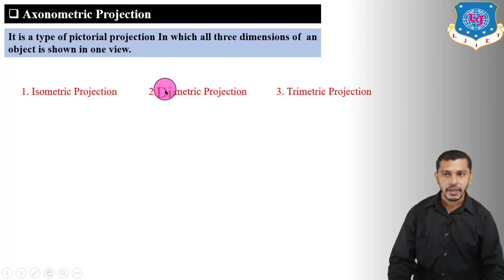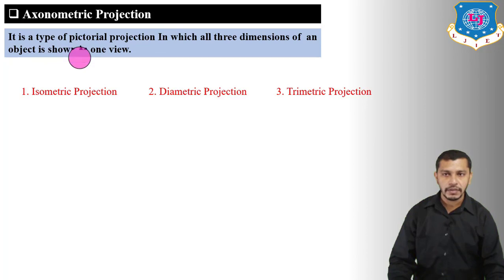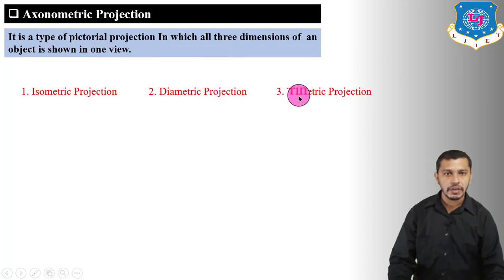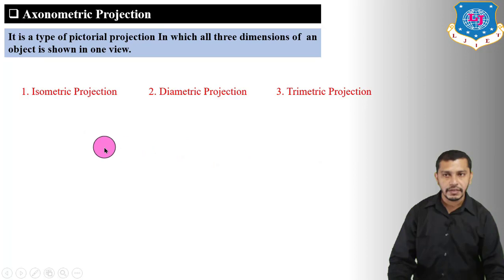In isometric projections, all three dimensions of the object are shown using isometric planes. In diametric projections, all three dimensions are shown using diametric planes. And in trimetric projections, all three dimensions are shown using trimetric planes. Let us first discuss about isometric planes, diametric planes, and trimetric planes.